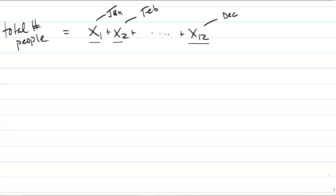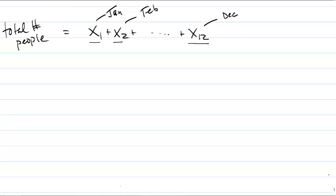What happens in the proof is a series of 12 substitutions, all rolled into one line. By assumption, there are no three people born in the same month. Therefore, the number of people born in January, represented by x1, has to be at most two. Similarly, the number born in February is at most two, all the way through December.